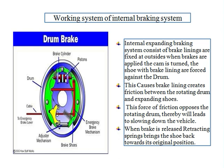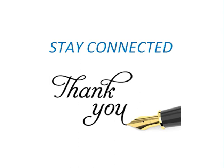Working of the internal braking system: the internal expanding braking system consists of brake linings fixed on the outside of the shoes. When brakes are applied, the cam is turned and the brake linings are forced against the drum, creating friction between the rotating drum and the expanding shoes. This friction opposes the rotating drum, thereby slowing down the vehicle. When the brake is released, the retracting springs bring the shoes back to their original position. This concludes the basics of brake system, main functions of braking system, hydraulic braking system, pneumatic braking system and mechanical braking system.